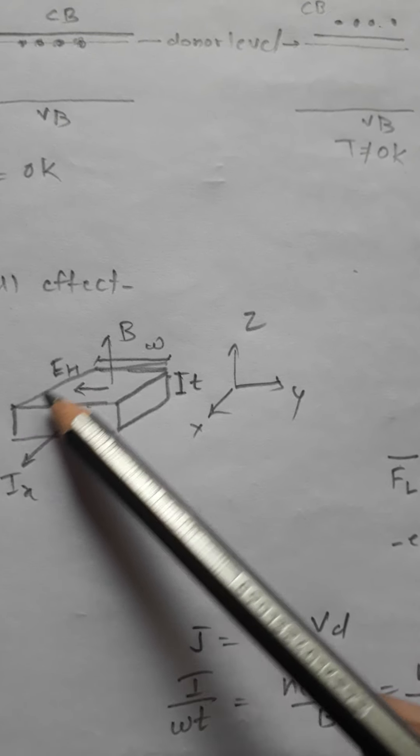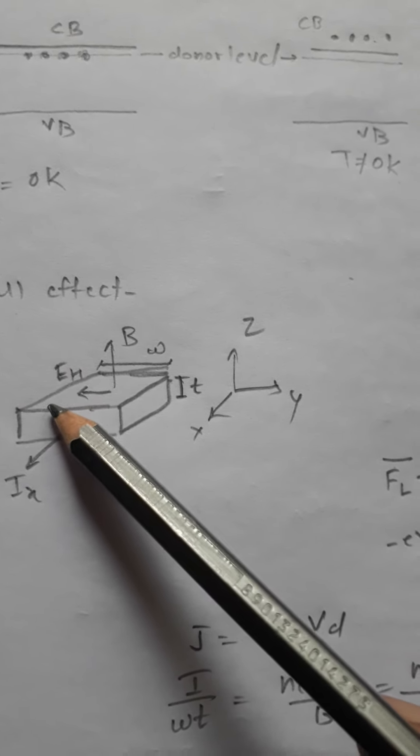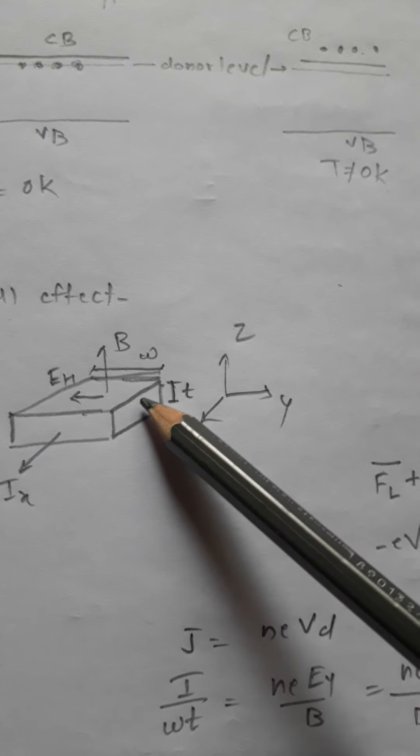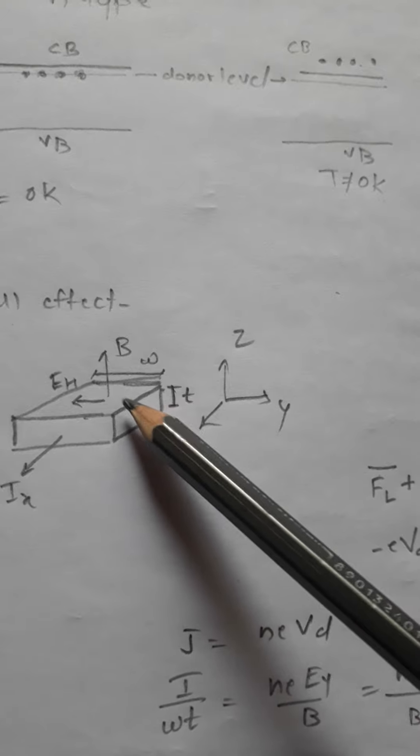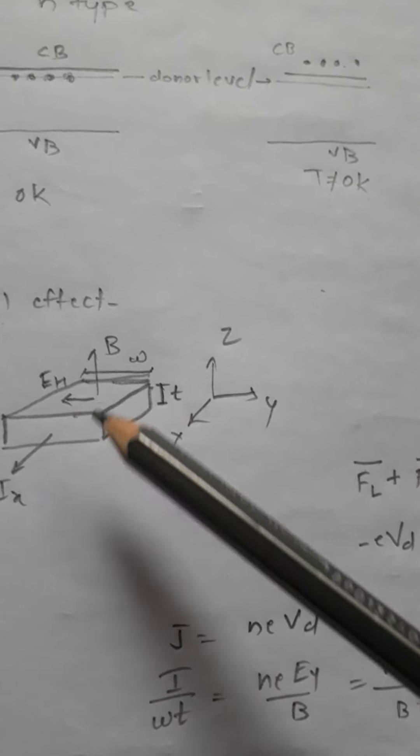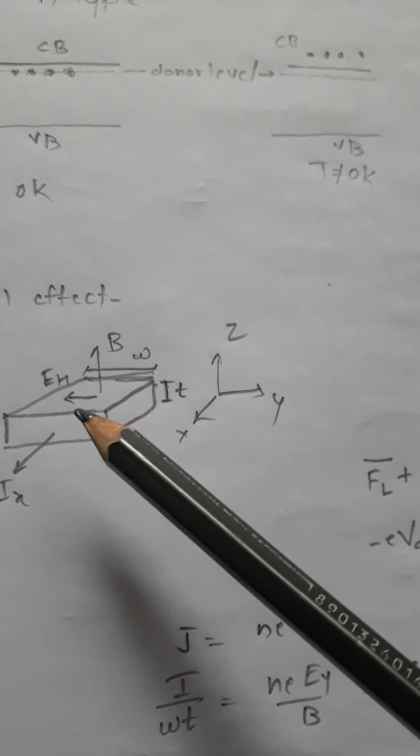To maintain charge neutrality, equivalent opposite charge builds up on this face, and because of this, an electric field gets established in the conductor. This is known as the Hall effect.